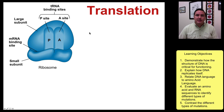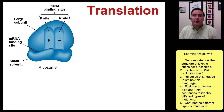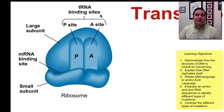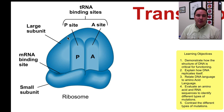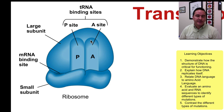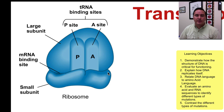Once the messenger RNA leaves the nucleus, it undergoes translation. Ribosomes are the sites where this occurs. A ribosome has a small subunit and a large subunit. In the large subunit, there is the P-site and the A-site. This is where transfer RNAs come and dock. There is also a groove where the messenger RNA is attached.